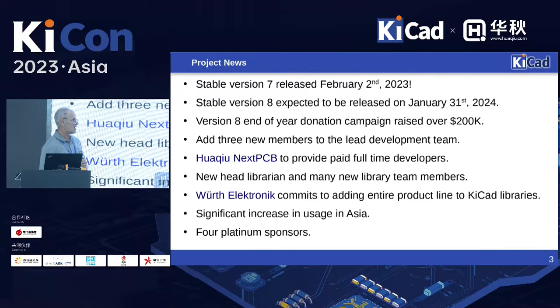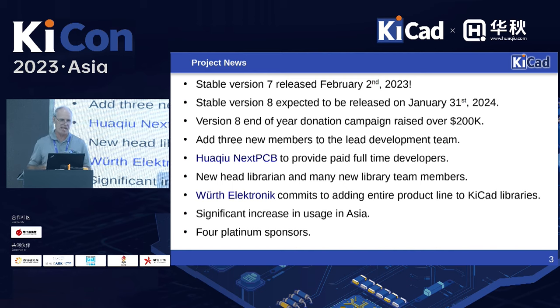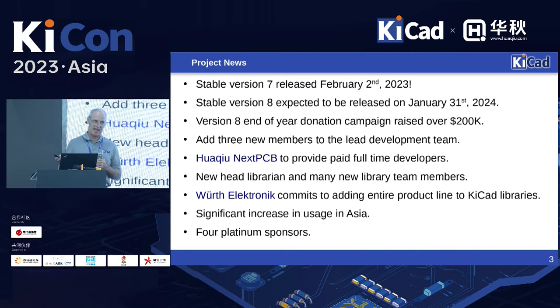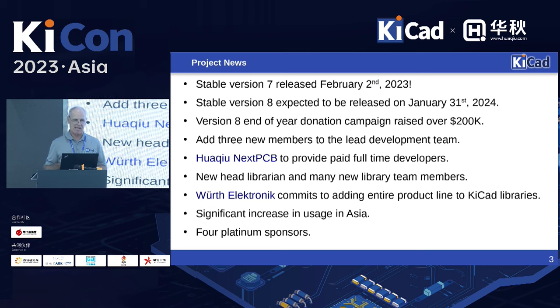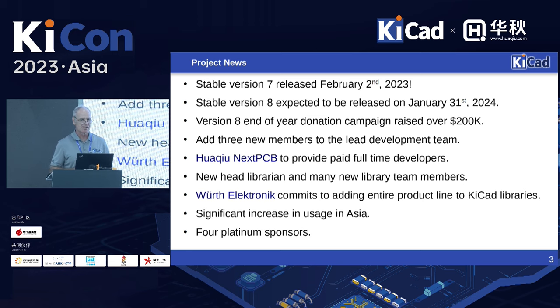The stable version 7 was released on February 2nd, so we did miss our target by a couple of days this year. Version 8 will be released on January 31st of next year. So far that's going on track — we've been in feature freeze for a month, so we're bug fixing and getting ready for that.